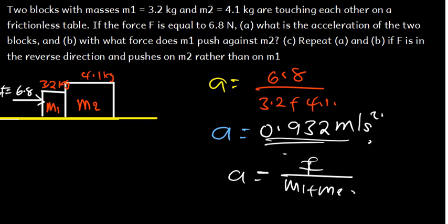Now Part B asks: with what force does M1 push against M2? According to Newton's third law, the force that M1 exerts on M2 is the same magnitude as the force M2 exerts on M1, but in the opposite direction — for every action there is an equal but opposite reaction. So the force M1 exerts on M2 equals the force M2 exerts on M1 in magnitude.